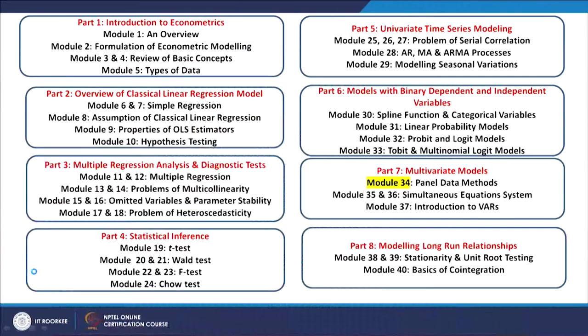Hello, this is module 34 of the course on Econometric Modeling. Module 34 onwards is basically part 7, where we are focusing on multivariate models. Multivariate models would primarily involve three types of modeling techniques we are going to discuss here.